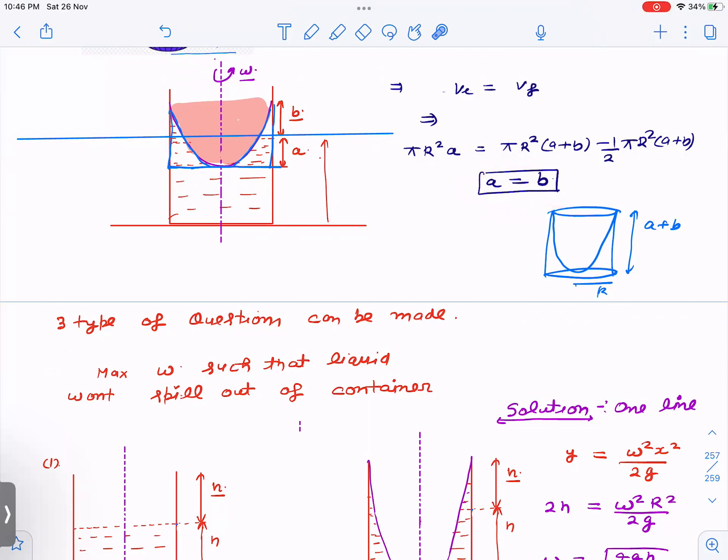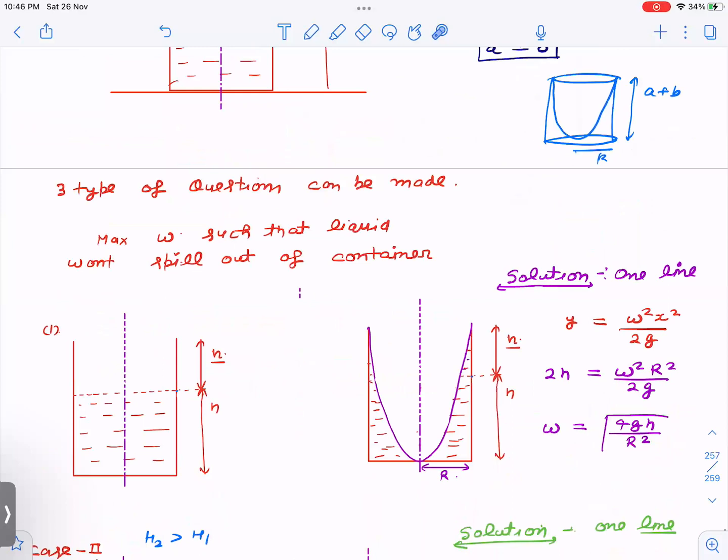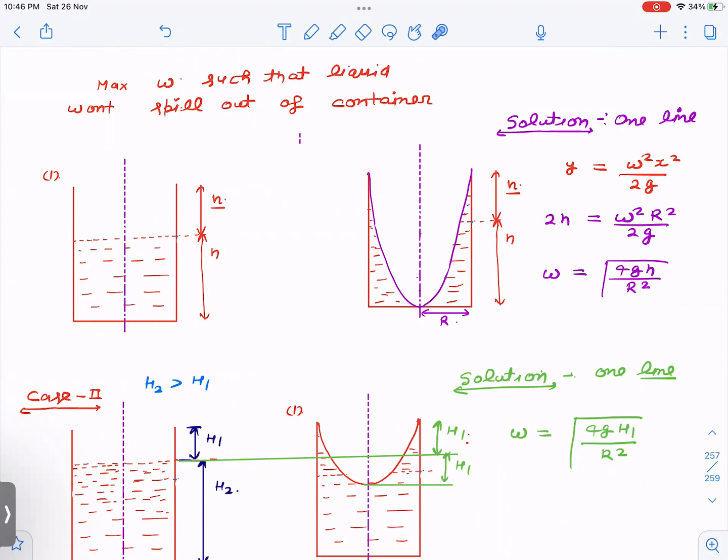Now, let us see how do we solve the questions using this, just in one line. So three types of questions, three cases. In one case, when container is half filled, this is also H, this is also H. We have to find max omega so the liquid will not spill out of the container. So limiting case, we have to take when liquid just comes to the topmost point or brim of this container. So if liquid profile comes here, that means from the original level, it has to go up by H. But from the previous result, we know that from original level, if it goes up by H, it has to go down also by H. So immediately you can draw this diagram. And then use Y equal to omega square X square by 2G. So Y equal to 2H, X equal to R, we get omega equals root of 4gH by R square, just in one line.